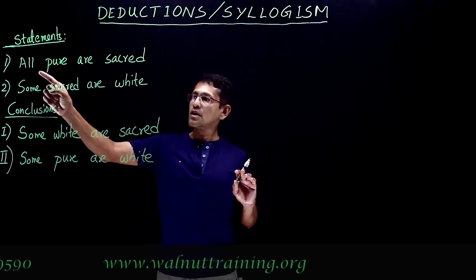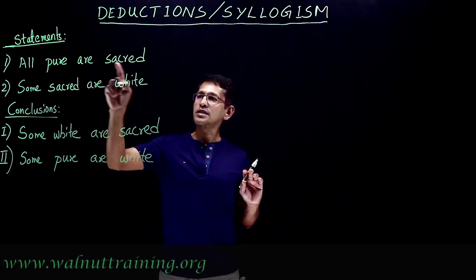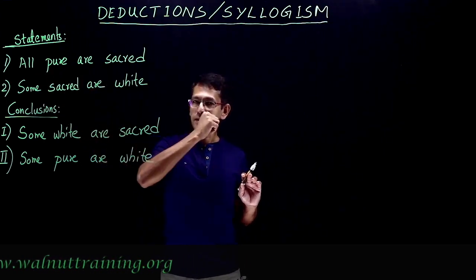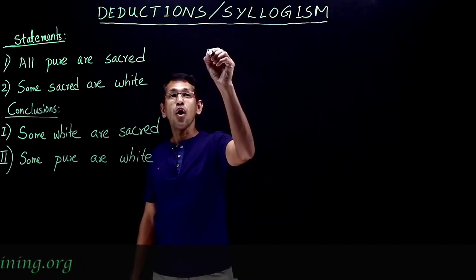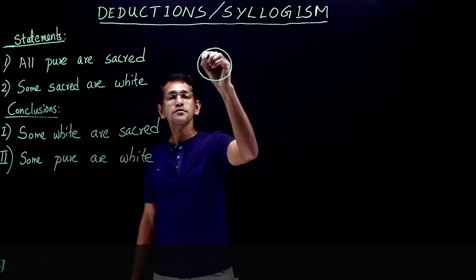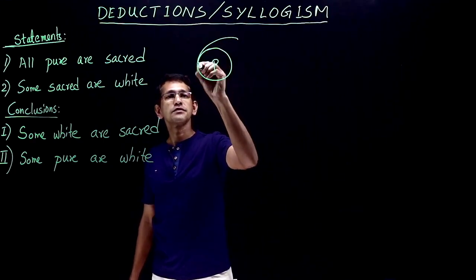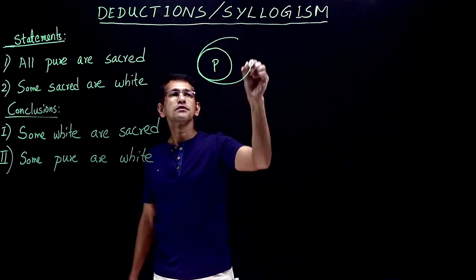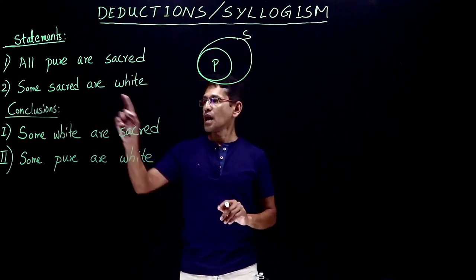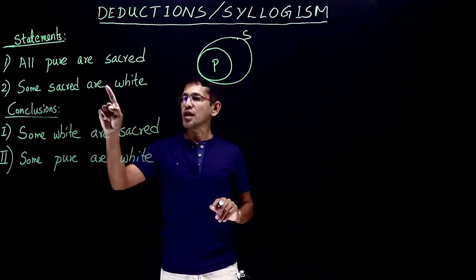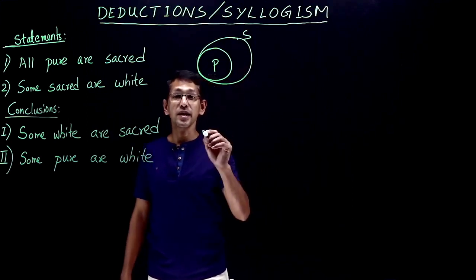So, this is the first statement: all pure are sacred. How do we draw the diagram? For 'all pure are sacred', the pure circle goes inside the sacred circle. The second statement is: some sacred are white.